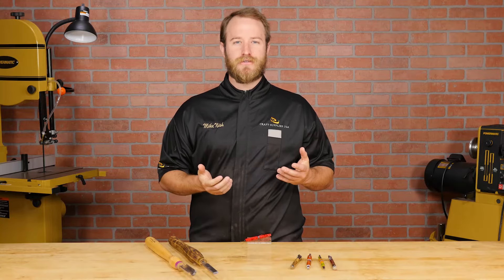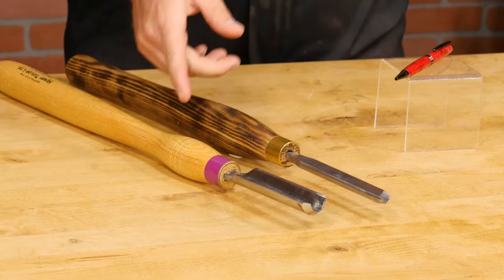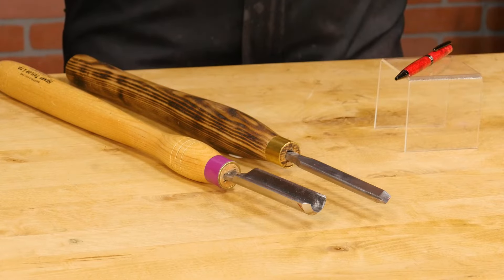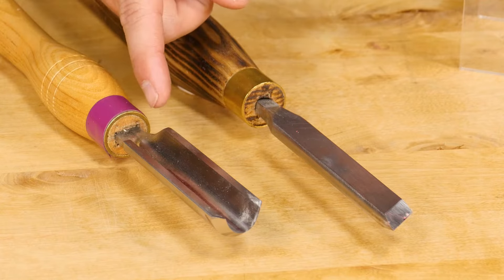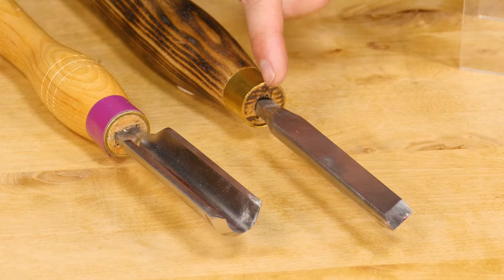What do I mean by traditional tools? I'm talking about the basic tools that most woodturners have in their shops, like the skew and the spindle roughing gouge. I turn most of my pens with just two tools, a ¾ inch spindle roughing gouge and a ¾ inch skew chisel.